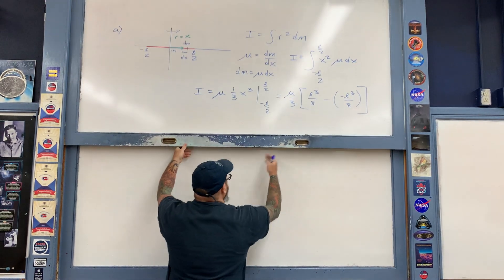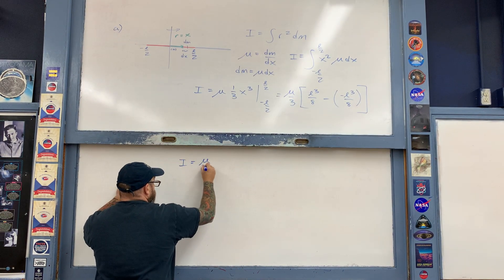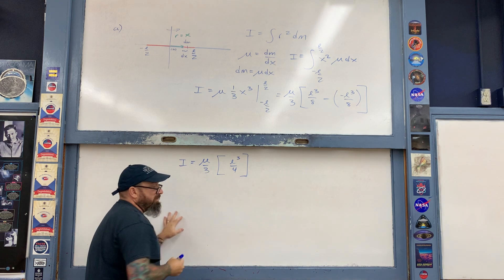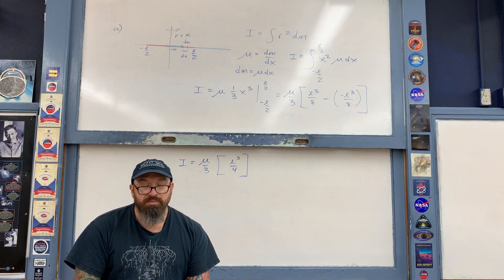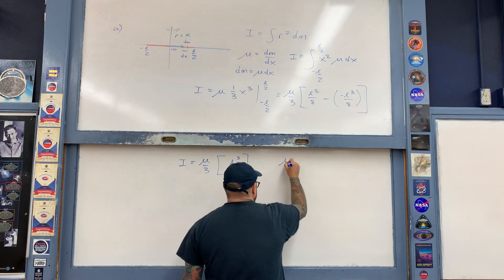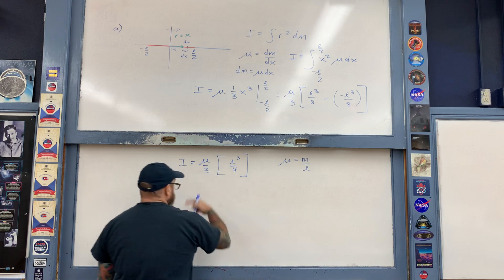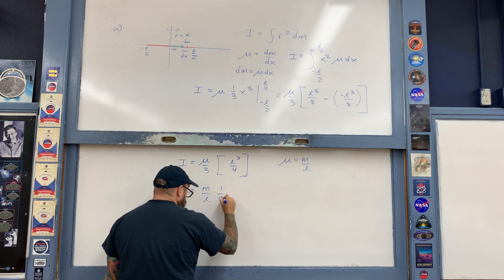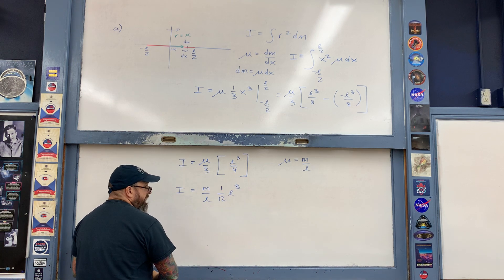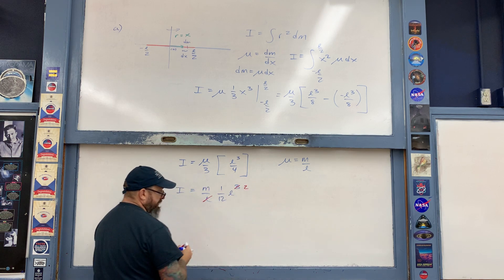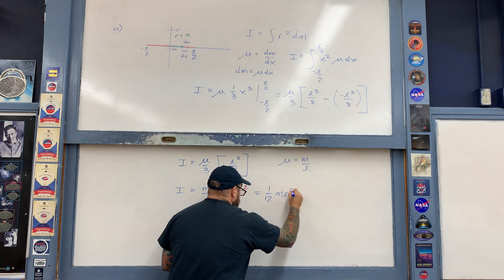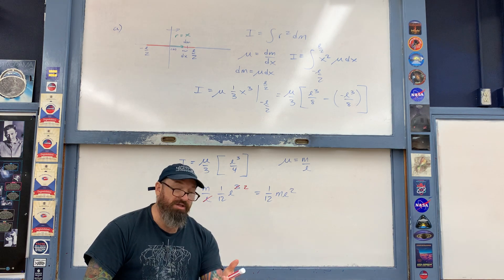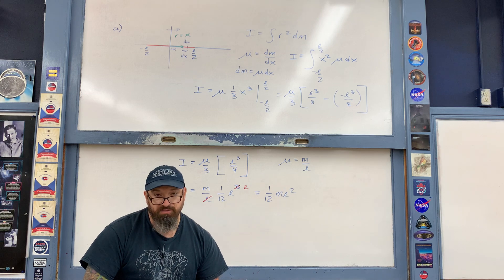The rotational inertia is (mu/3) times (l³/4). Now let's replace the density mu by writing it as total mass divided by total length. Plugging in m/l for mu, with 3 times 4 giving one-twelfth, times l cubed, and one l cancels, we end up with I = (1/12)ml². You will very rapidly memorize this value for problems going forward, but you do have to know how to derive it.